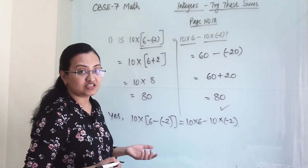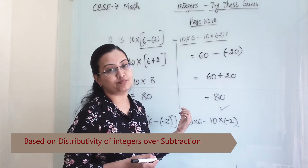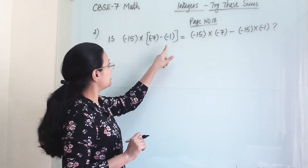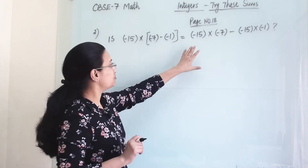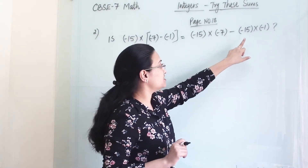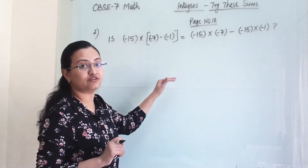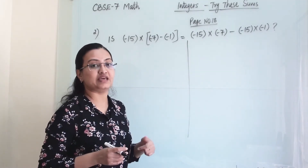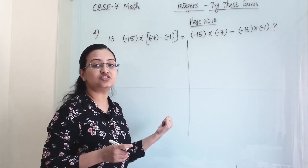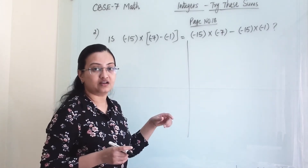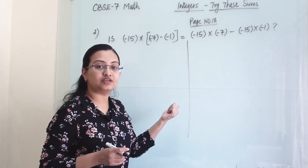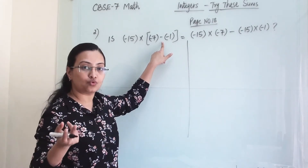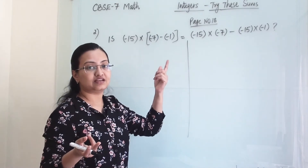If they have asked for the property, we mention it as well. Our next sum is: minus 15 into bracket minus 7 minus minus 1 is equal to minus 15 into minus 7 minus minus 15 into minus 1. We have to check the same thing for this group of numbers. This is based on distributive properties of multiplication of integers — specifically, we are proving the distributivity of multiplication over subtraction. Earlier in the first set we saw distributivity over addition; now this is over subtraction.